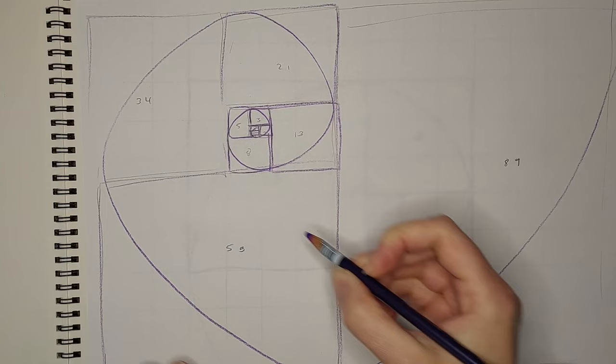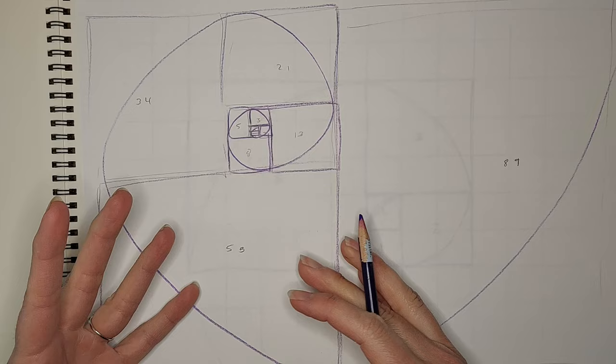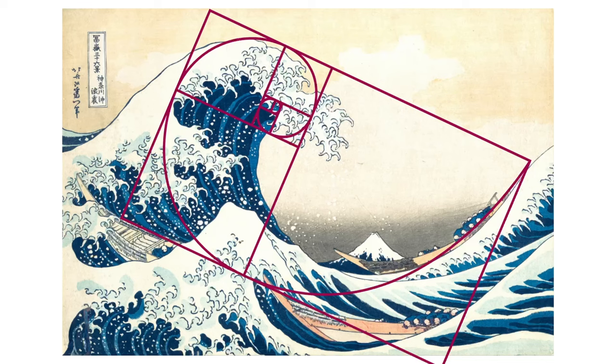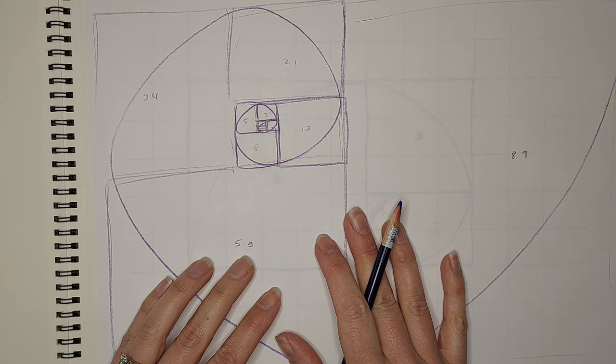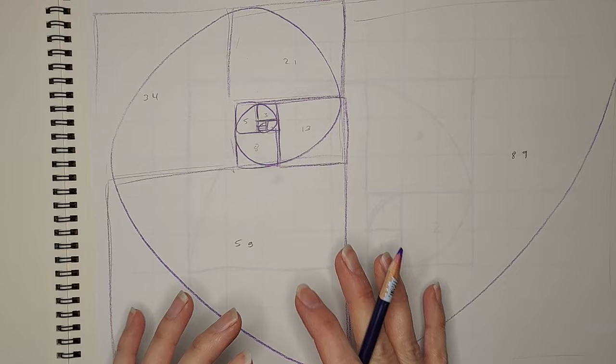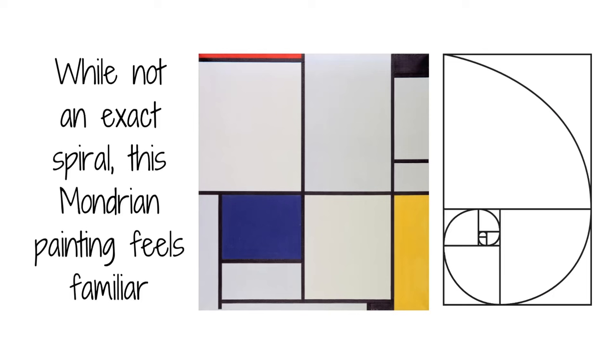And so this is kind of like the visual math of the universe. So as an artist, when we learn how to use this, it helps make our paintings, if we're doing anything that's realistic or abstract, it helps make our paintings feel right. Like somewhere down deep in us as humans, we go, oh yes, the spiral. Okay. I'm good. I got it. All right.